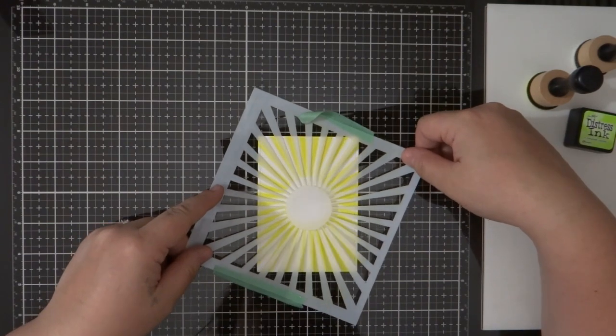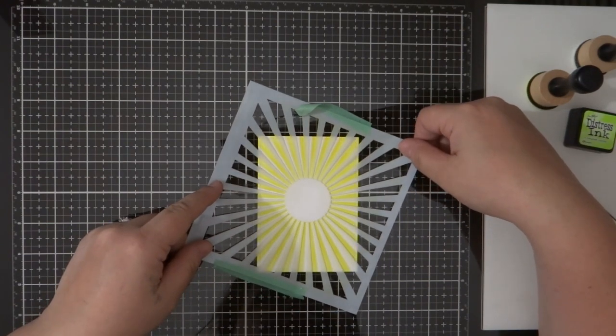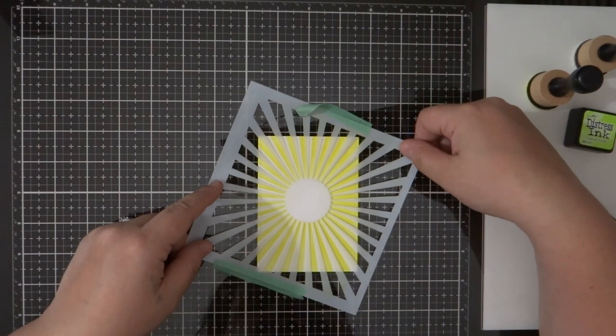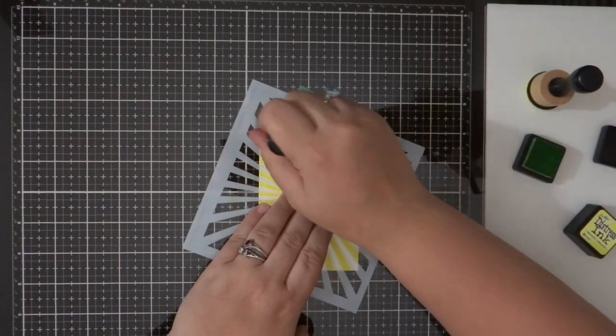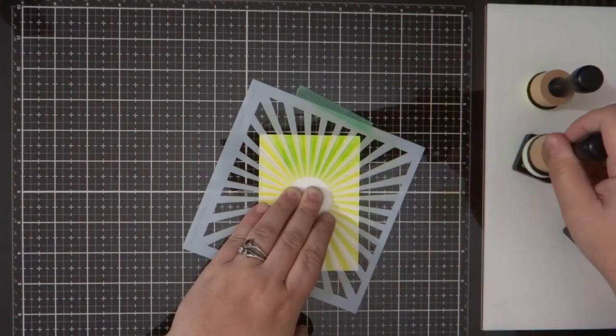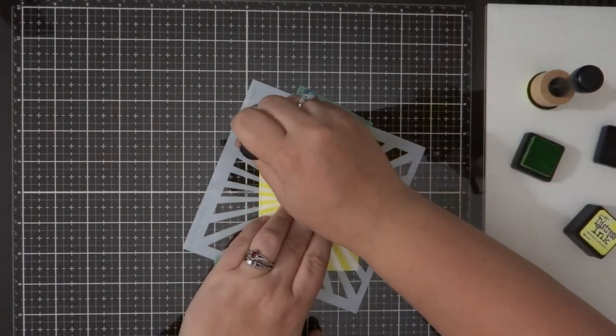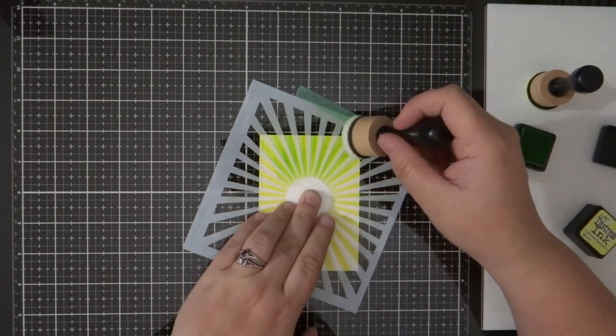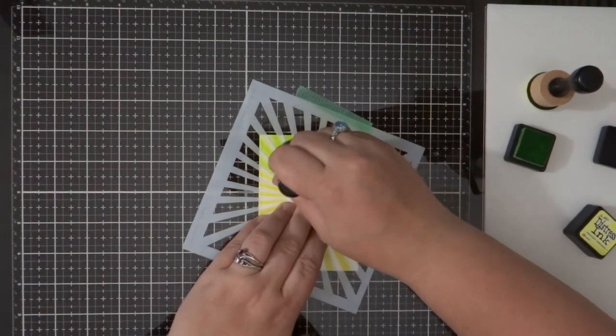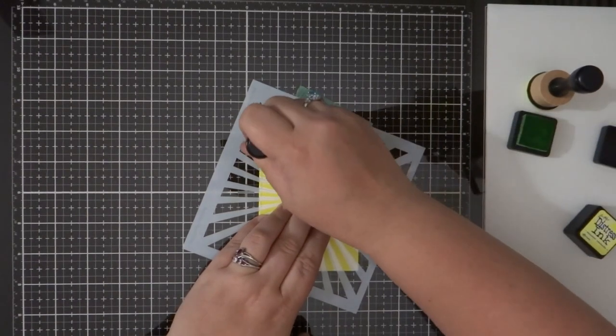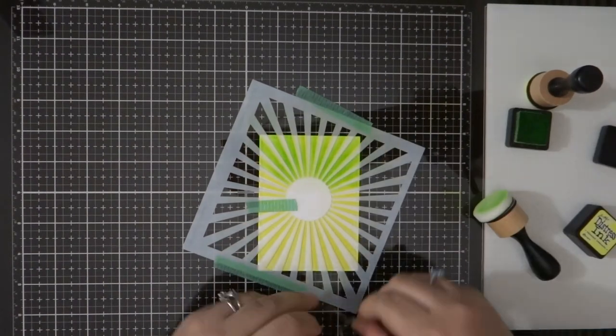I'm going to peel off that stencil and then twist it just a little so that I can get a bit of an offset for this twisted citron ink that I'm going to blend onto it. And I only want to blend part of this stencil with the green. So I'm going to use some washi tape just as a guideline so I don't go over.